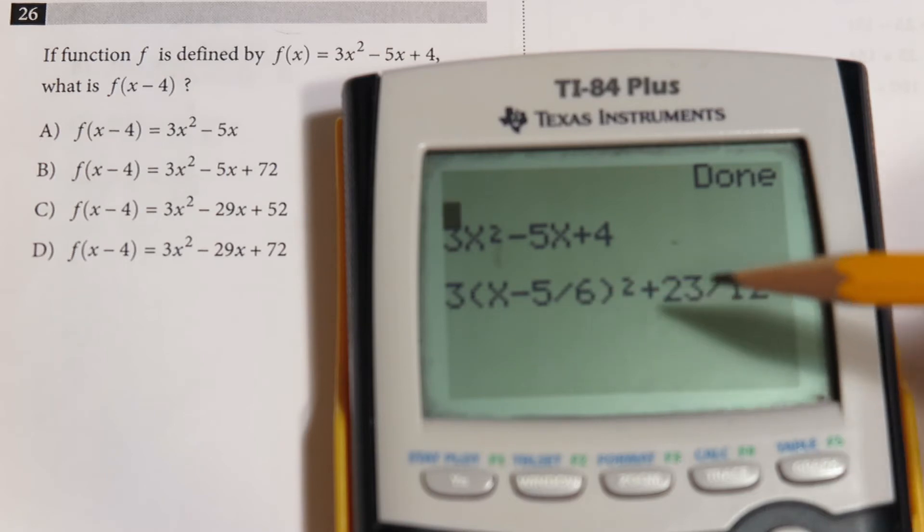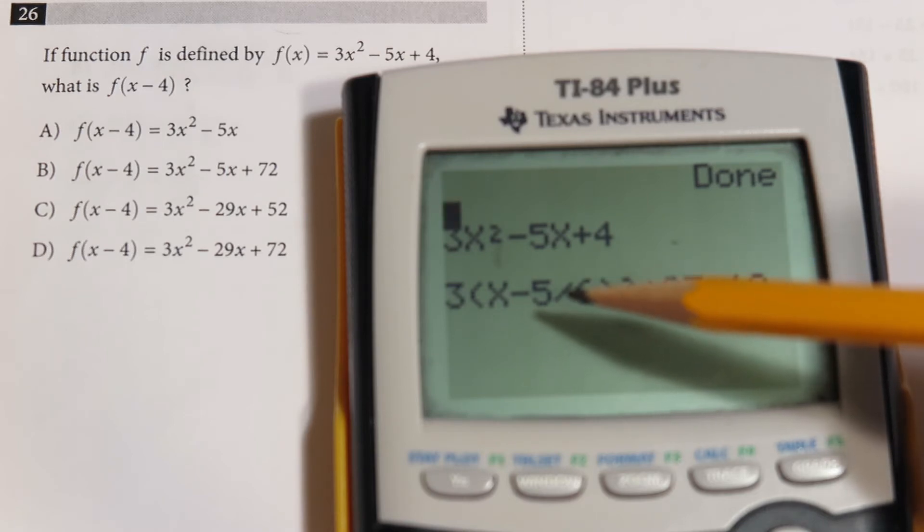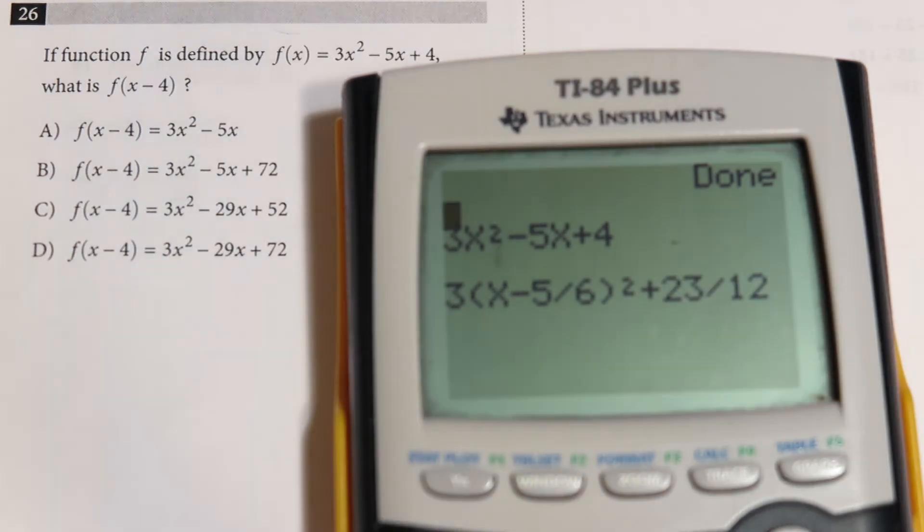Now that I have it in vertex form, I can add 4 to the vertex to shift it to the right. Let's do that, and then I'm going to convert it back to standard. I'm going to choose option 2, and the leading coefficient is still 3.